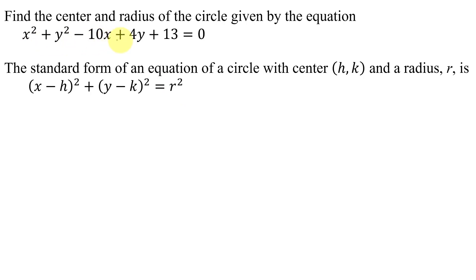I need to rewrite this equation in standard form. To do that, I need to group my x's together. I'm going to have x squared minus 10x plus a blank because I'm going to have to add a constant that turns this expression into a perfect square trinomial.